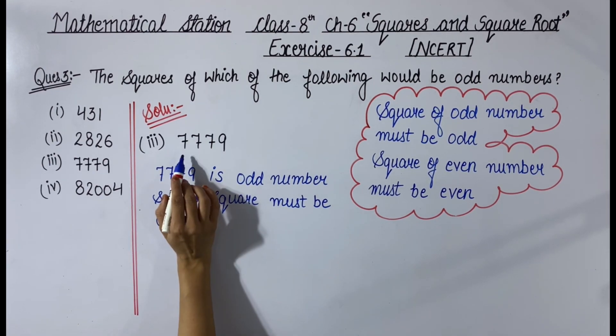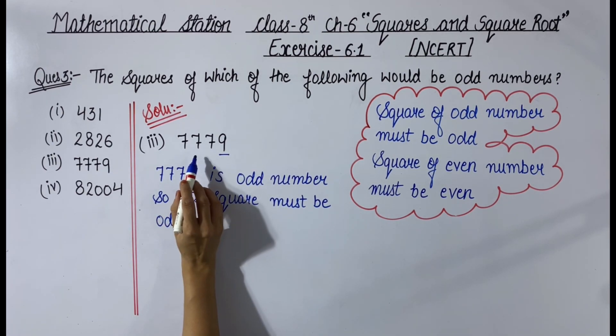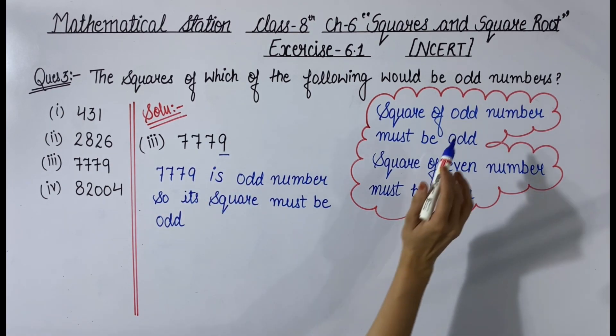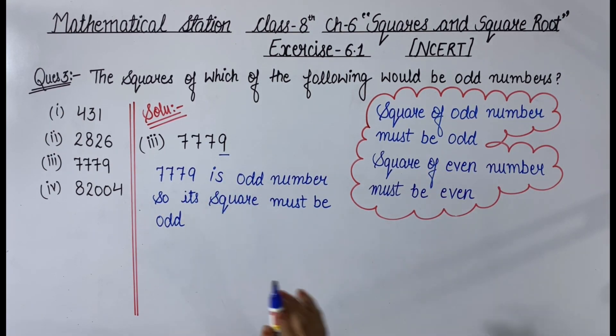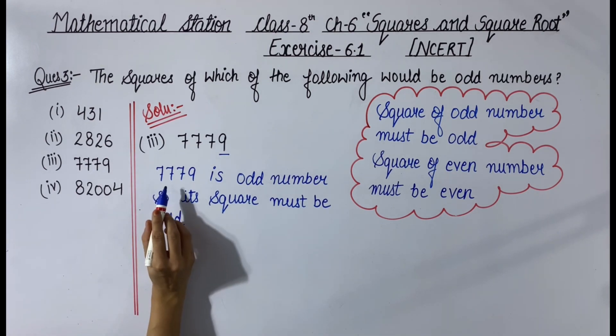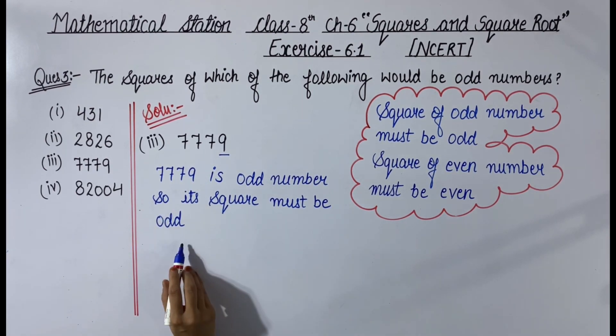Now third one is 7779. Here the last digit is 9, which is odd, so 7779 is an odd number and we know that an odd number's square is odd. Therefore, 7779 is odd so its square must be odd. Clear?